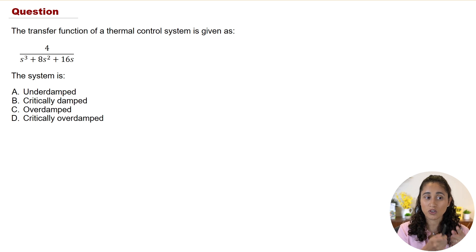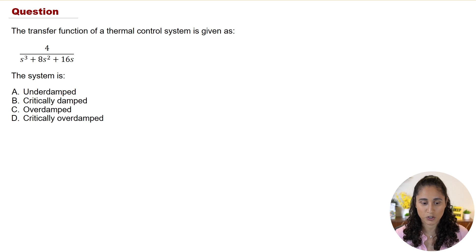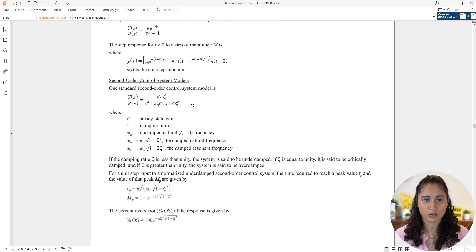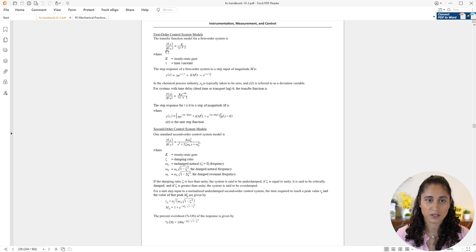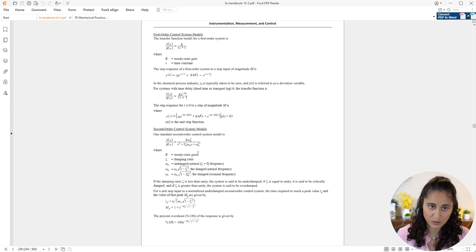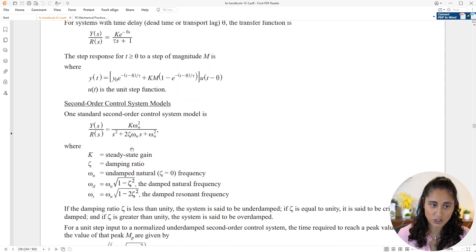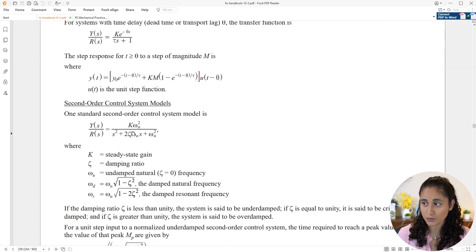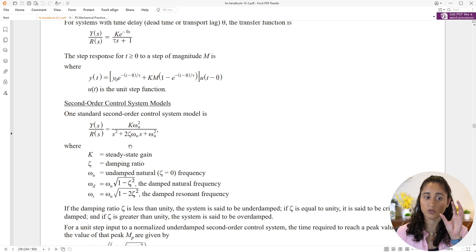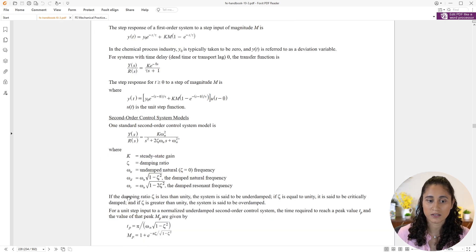To solve this problem, the first thing we need to do is determine the damping ratio. We'll go to the reference manual and look at this section — first-order and second-order control systems. We're specifically going to look at the equation that contains zeta, the damping ratio. We'll compare that equation to the one we have and determine zeta, which will tell us the type of system.